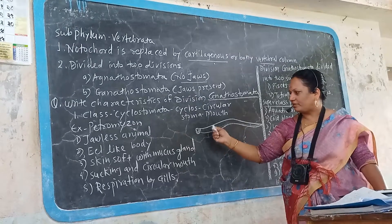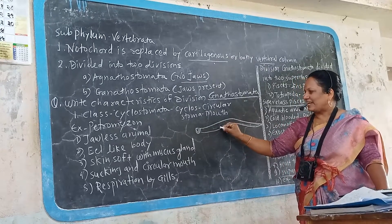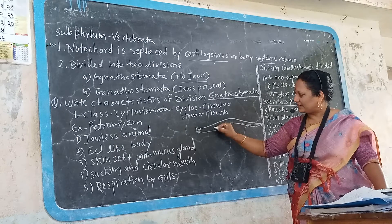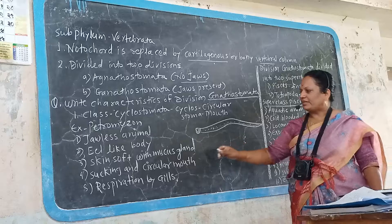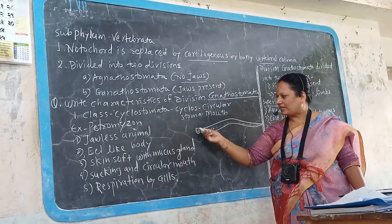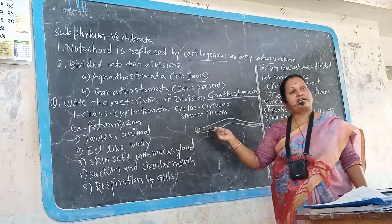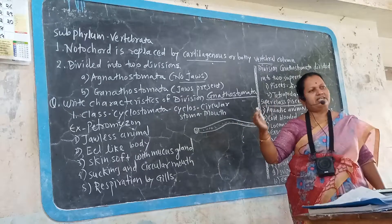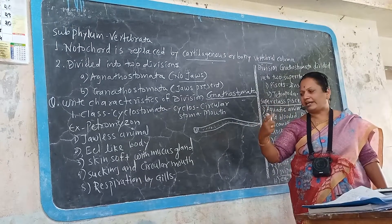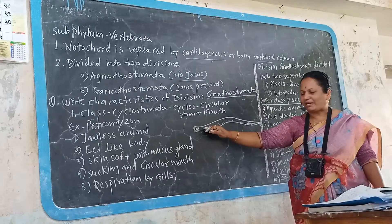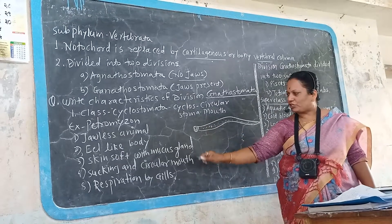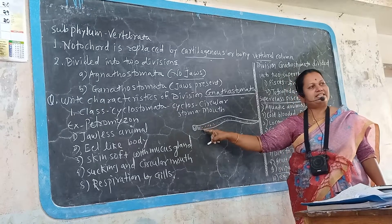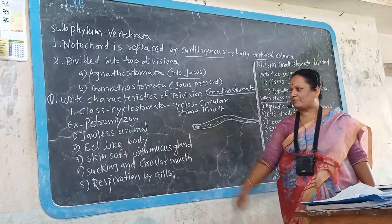In Petromyzon, the skin is soft with mucus glands. It has a sucking circular mouth and is an ectoparasite — meaning it feeds on the blood or body fluids of another animal. Respiration occurs by gills.